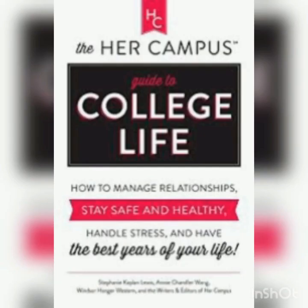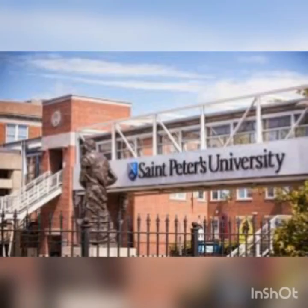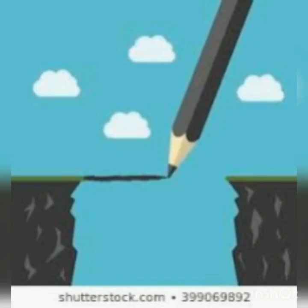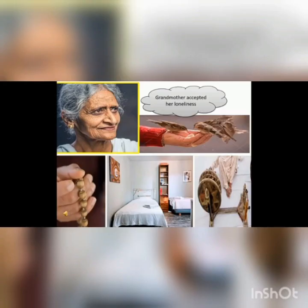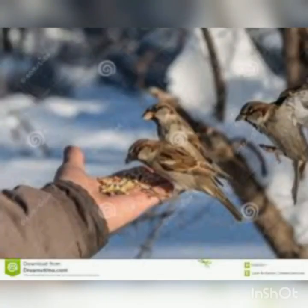The next phase is the narrator's college life. He went to university and was given a room of his own. A widening gap of friendship grew between the grandmother and the author. The grandmother quietly accepted her loneliness. She was always busy with her spinning wheel and reciting prayers, and she rarely talked to anyone. In the afternoon she relaxed for a while, and when she fed the sparrows, she sat in the veranda.